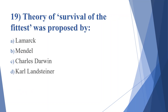Nineteenth question: theory of survival of the fittest was proposed by. Option A: Lamarck. Option B: Mendel. Option C: Charles Darwin. Option D: Carl Linnaeus. Answer is option C, Charles Darwin.